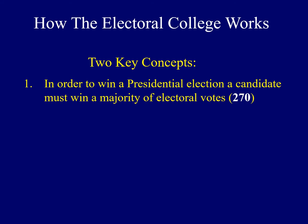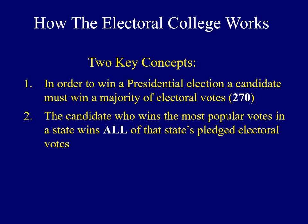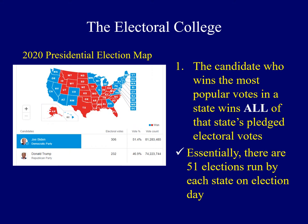The second key concept: the candidate who wins the most popular votes in an individual state wins all of that state's pledged electoral votes. Rather than having one national election every four years for president, essentially we have 51 elections — one in every state plus Washington D.C. — because electoral votes are handed out on a state-by-state basis.